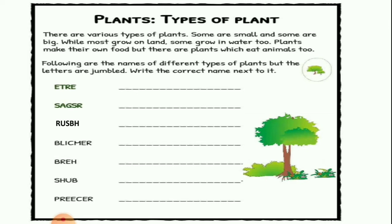First is E-T-R-E. It is very simple — you all know. That is tree. So kids, write this worksheet in your rough book, not your fair book. Take out your rough book and pencils and write along with me. First number is E-T-R-E, and the answer is tree. Write tree: T-R-E-E.